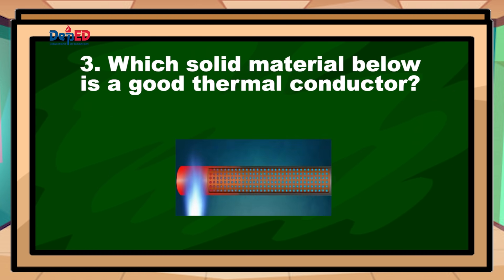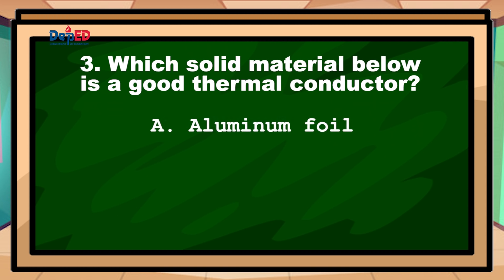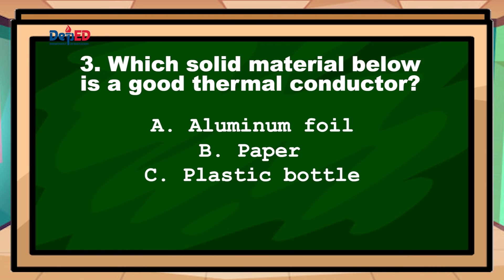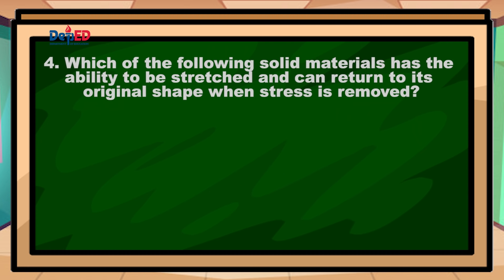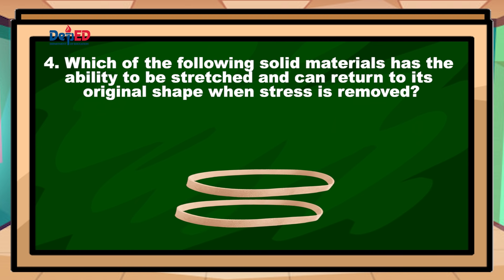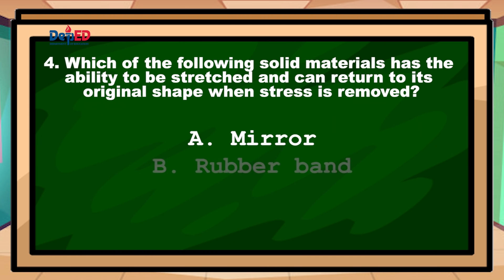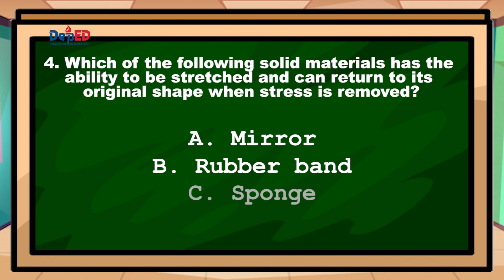Number three: Which solid material below is a good thermal conductor? A. Aluminum foil. B. Paper. C. Plastic bottle. D. Wine glass. Number four: Which of the following solid materials has the ability to be stretched and can return to its original shape when stress is removed? A. Mirror. B. Rubber band. C. Sponge. D. Wood.